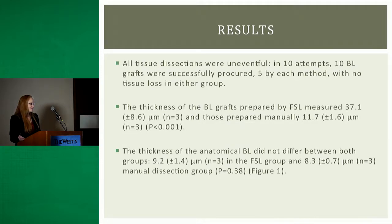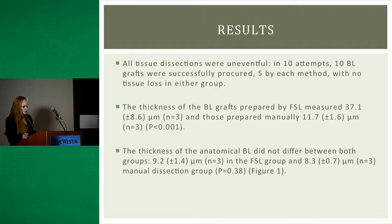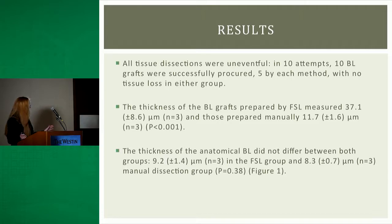We thankfully had ten successful attempts and obtained ten Bowman layer grafts. The average thickness of the Bowman layer graft from the femtosecond laser group measured 37.1 microns, as compared to 11.7 microns by manual dissection — a statistically significant difference. We did want to point out that the anatomical Bowman layer did not differ between the two groups, just the overall thickness of the graft that we procured.